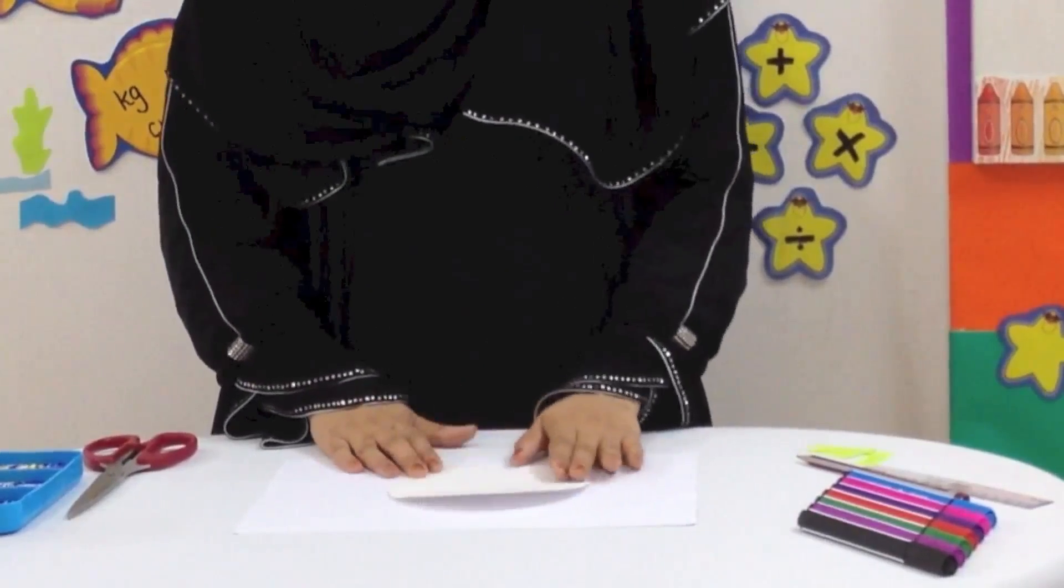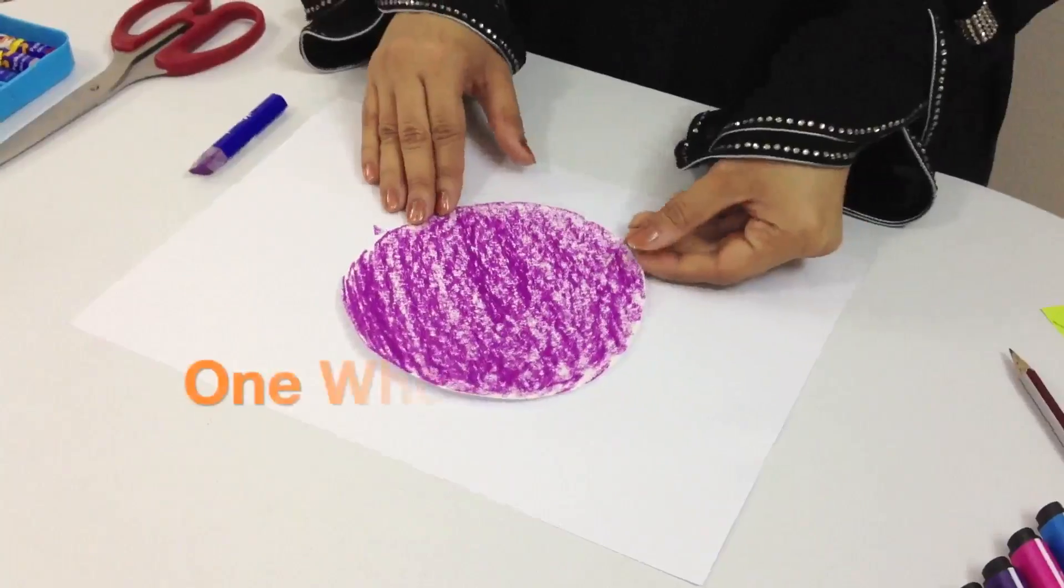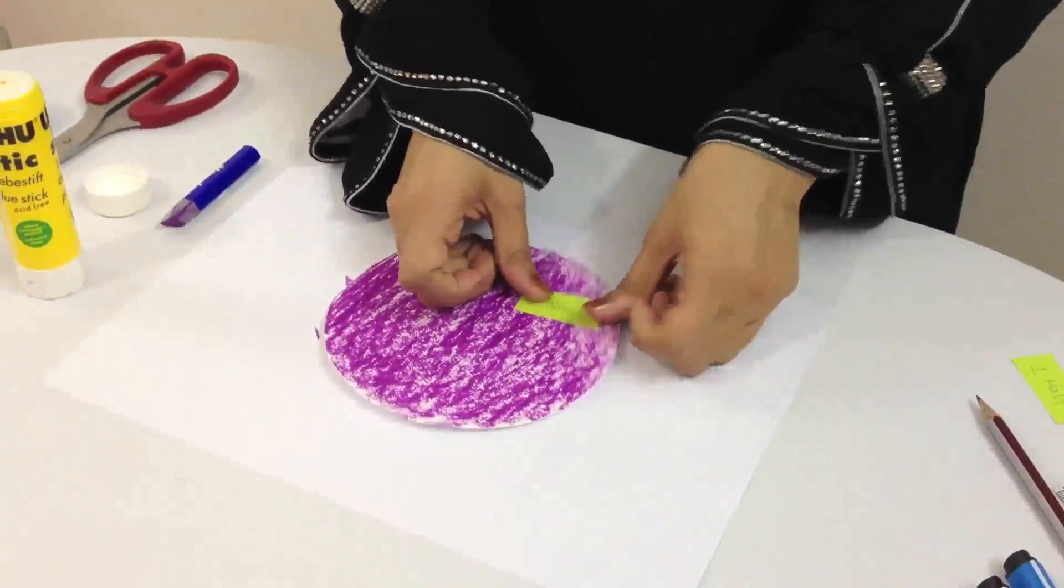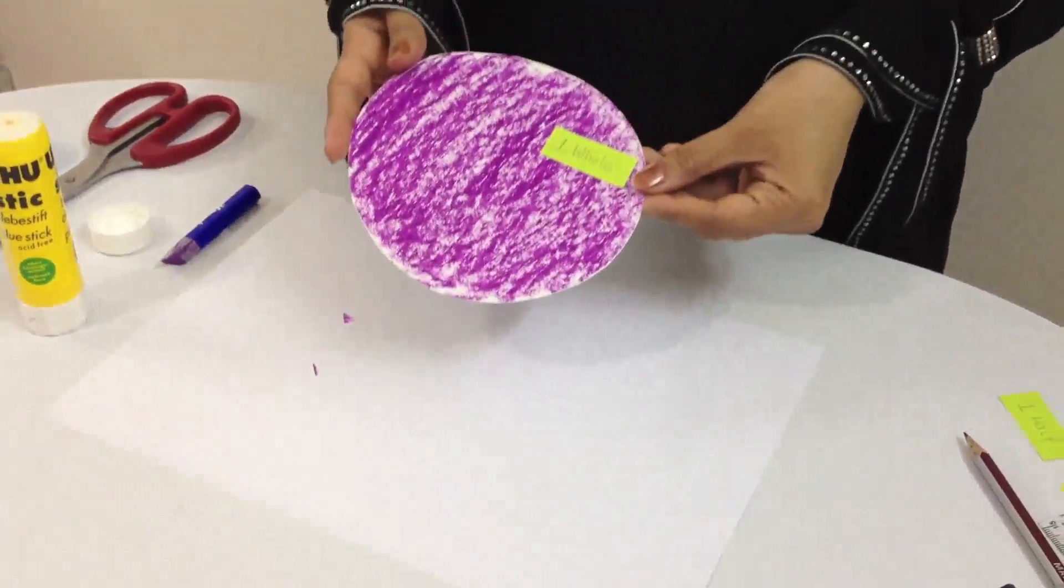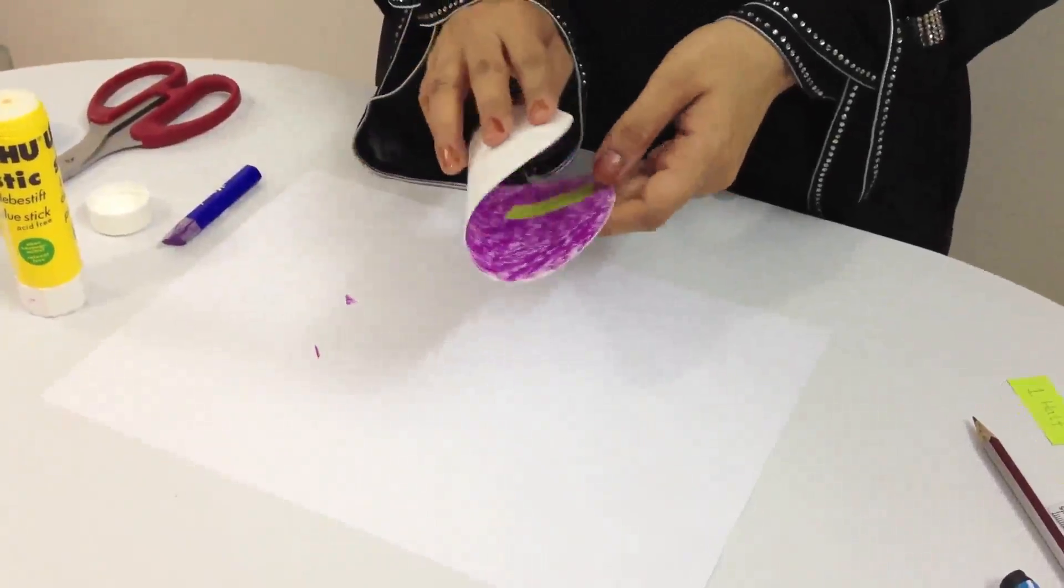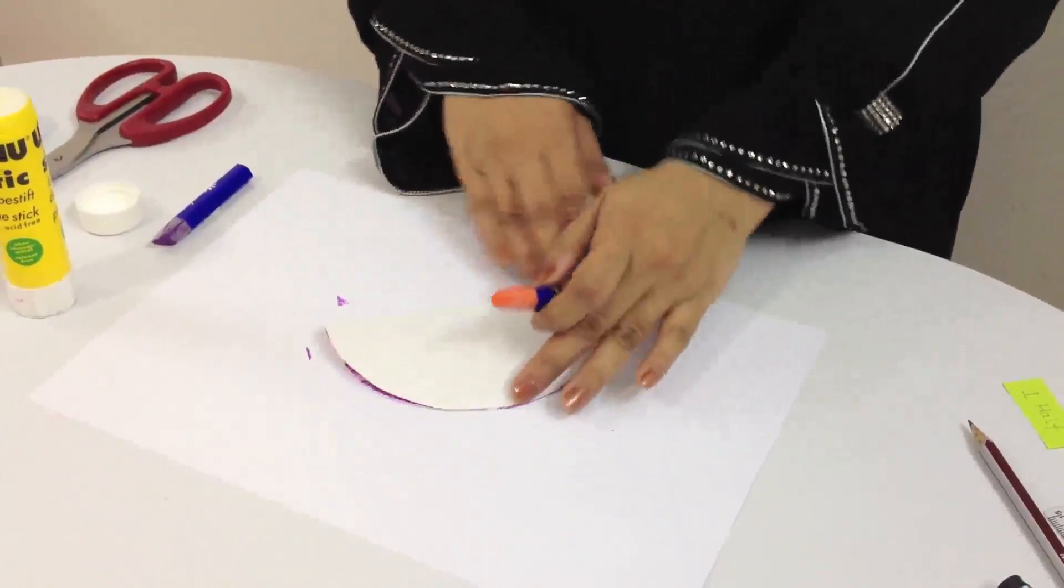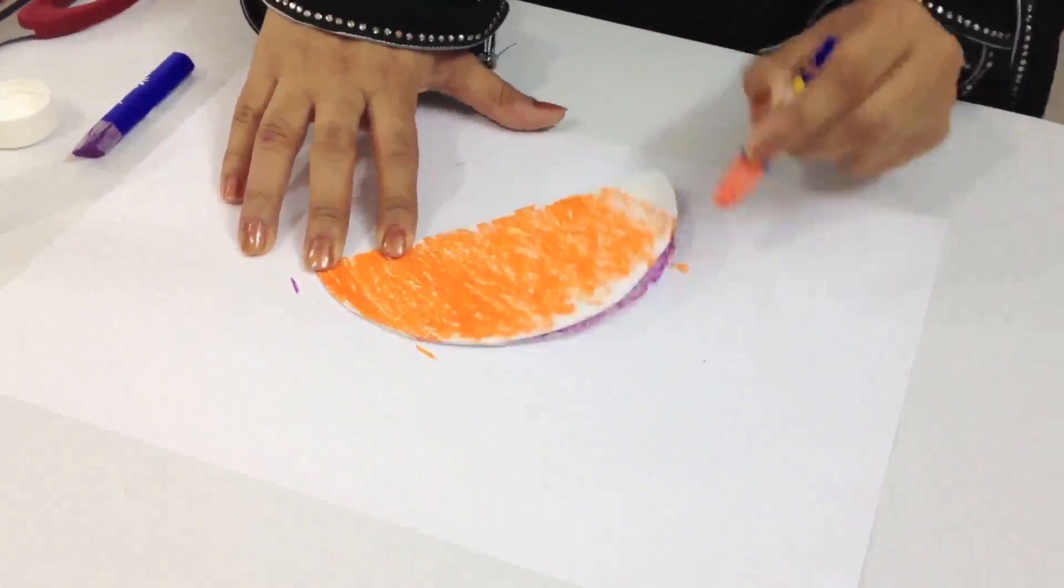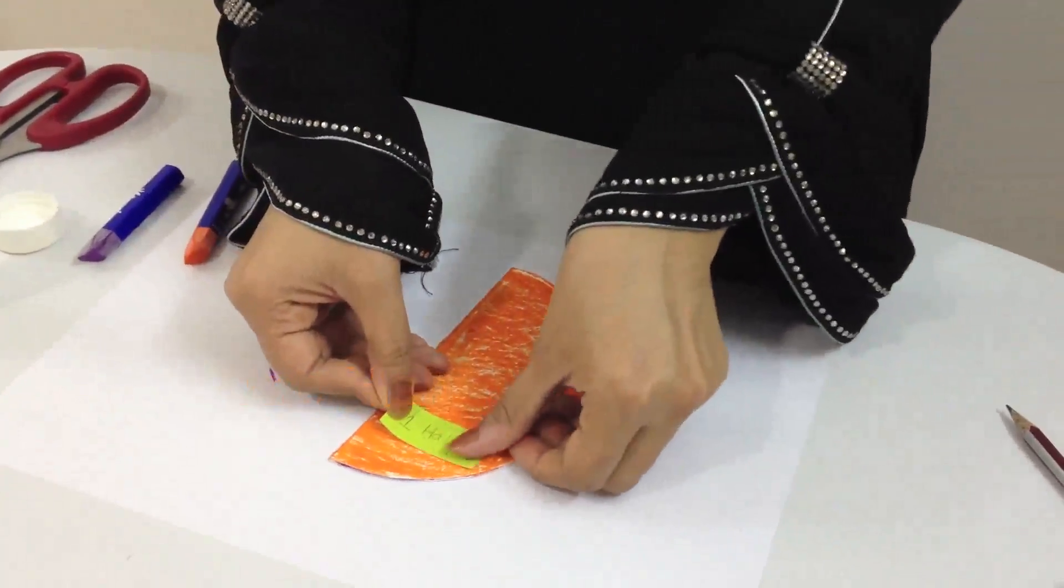We have a circle here and we are going to color the entire circle. Here we have the whole circle. Now we are going to label it, fold the circle to make the semicircle. This is one half of a circle.